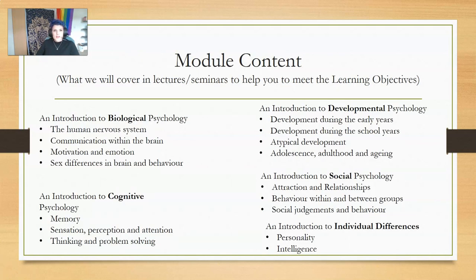So what is the module content? We're going to cover the basics of five core areas of psychology. Within the biological lectures, we'll learn about the human nervous system, how the brain communicates within itself and with other parts of the body, how biological structures influence motivation and emotion, and sex differences in brain and behavior. In cognitive psychology, you'll learn about memory, sensation, perception and attention, and thinking and problem solving.